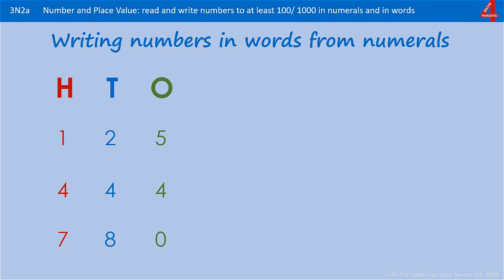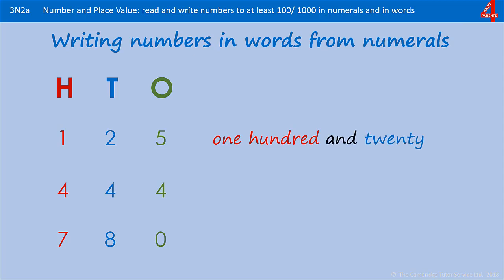In the first number we have one in the hundreds column, so we can write 100. In the tens column we have two tens which is 20, so that's 120, and in the ones column there's five, so it's 125.